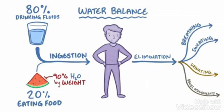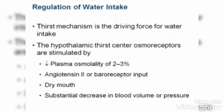For normal physiological functions there should be water balance inside the body. When we take in water by drinking fluids or by eating foods, we get water inside the body. That water gets eliminated through breathing, sweating, urinating, and bowel movements. A balance is very important, so there should be a proper balance of water.